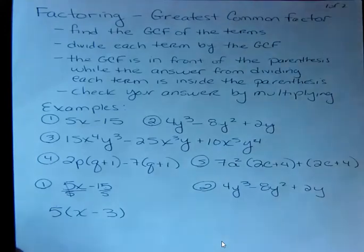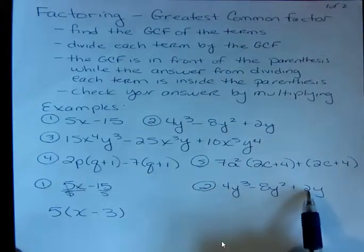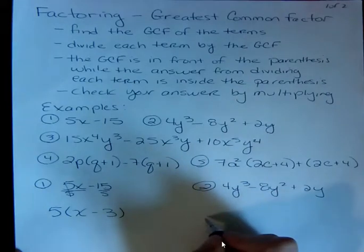Number 2, a little bit more difficult. What's the common factor for this one? Well, you can see that between 4, 8, and 2, the common factor for that would be 2. The greatest common factor, you always want to take out the biggest one. So I know that I have a 2.